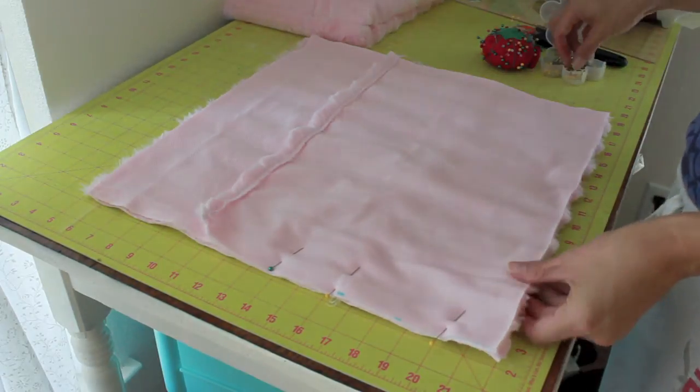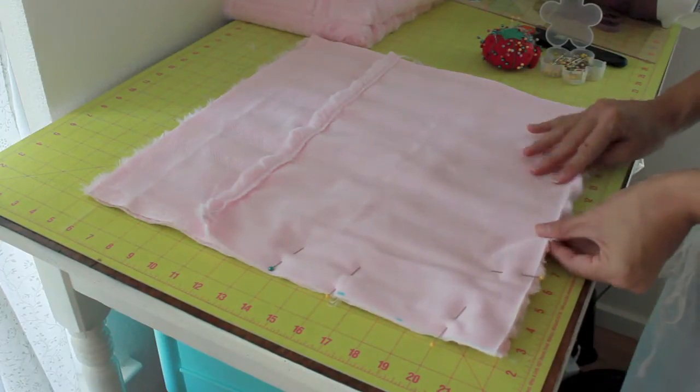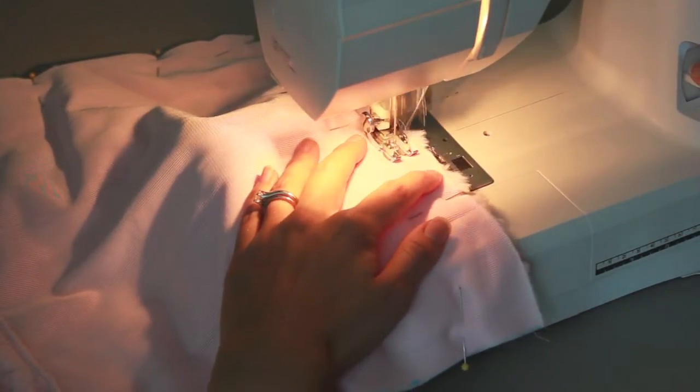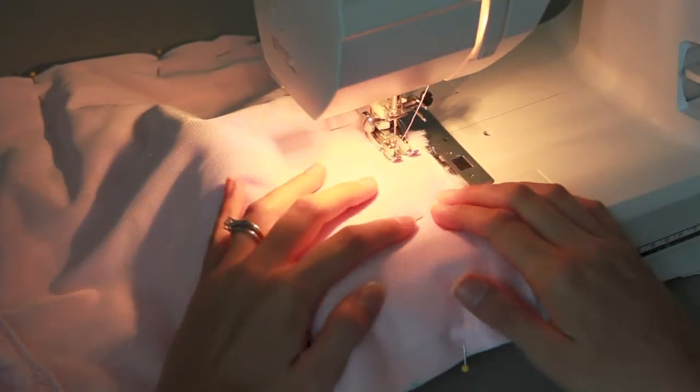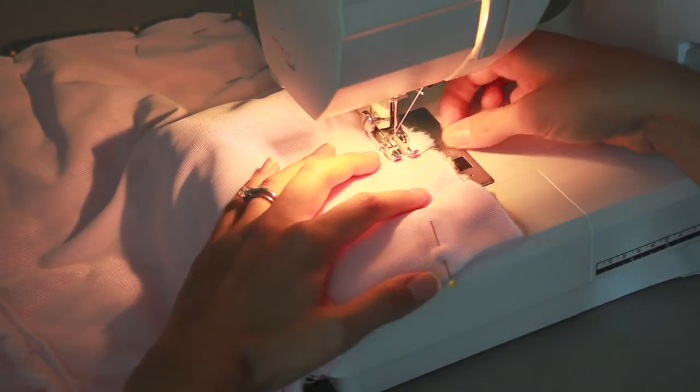Pinning is really important when using the cuddle fabric because it can shift a little bit at the machine. Over at the machine I used my 5/8 inch mark on my machine. I sewed a hair underneath that so it ends up being about a half inch seam allowance.